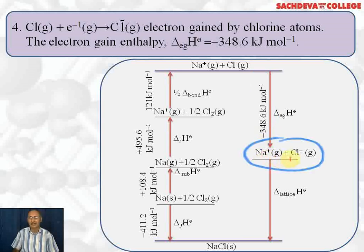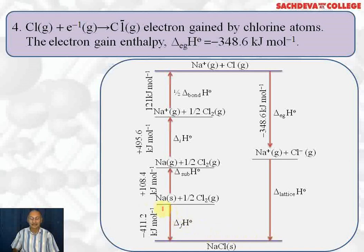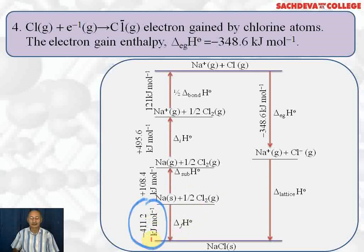Now sodium ion and chloride ion combine together to form a crystal lattice. When the crystal lattice is formed, energy is released; this energy is called lattice energy. To break the crystal lattice, energy is required, equal to the lattice energy but opposite in sign. Here, sodium solid plus half Cl₂ gas changes to sodium chloride solid.